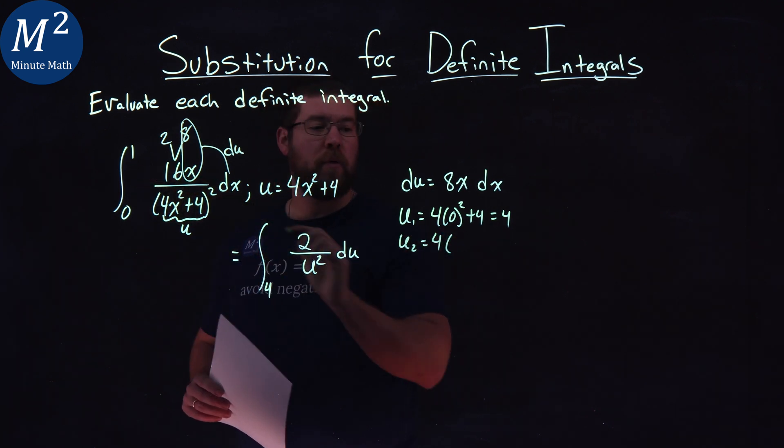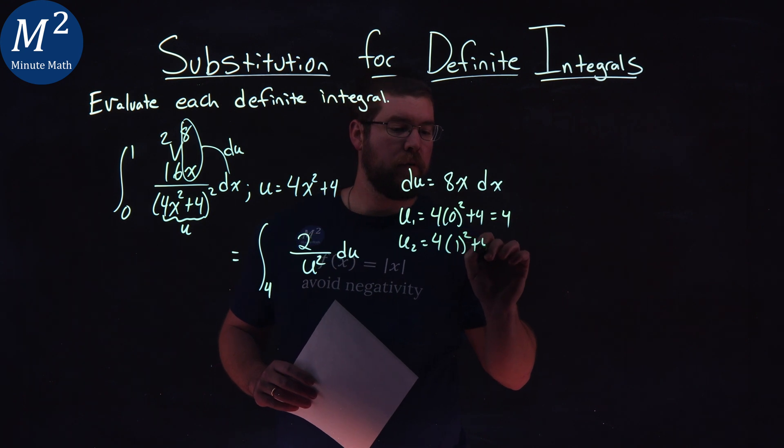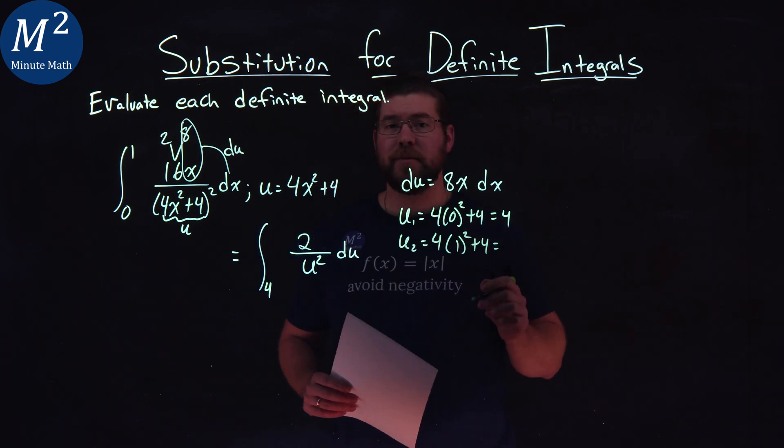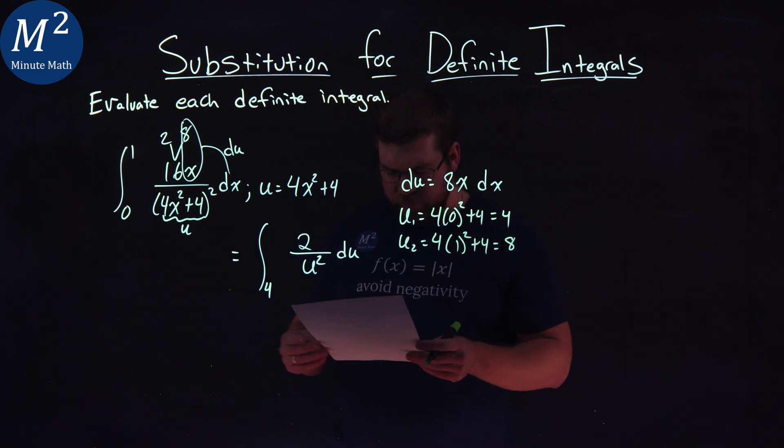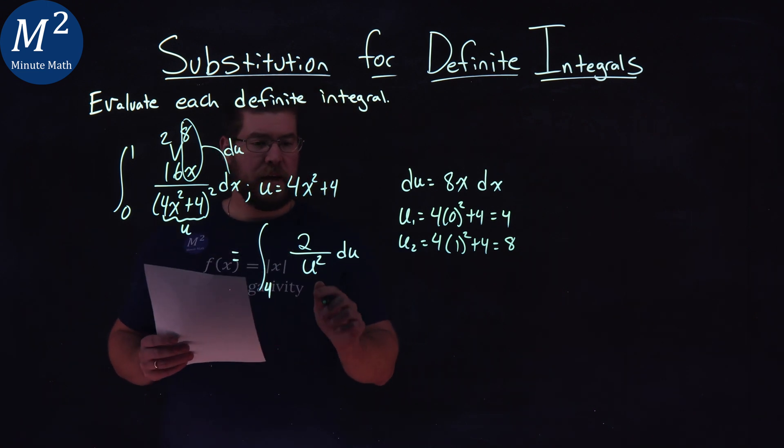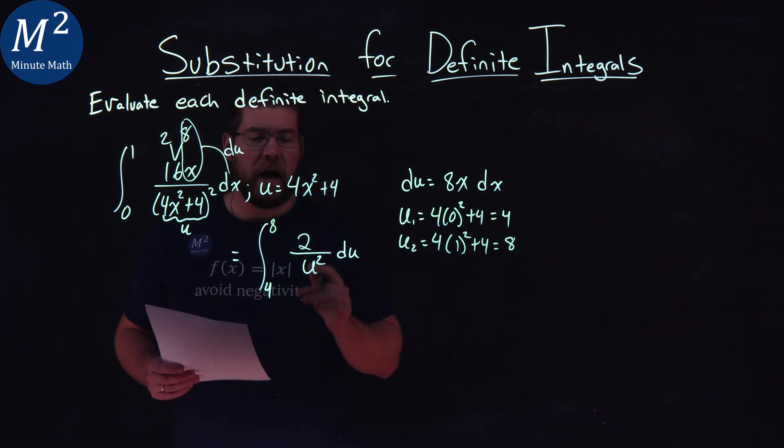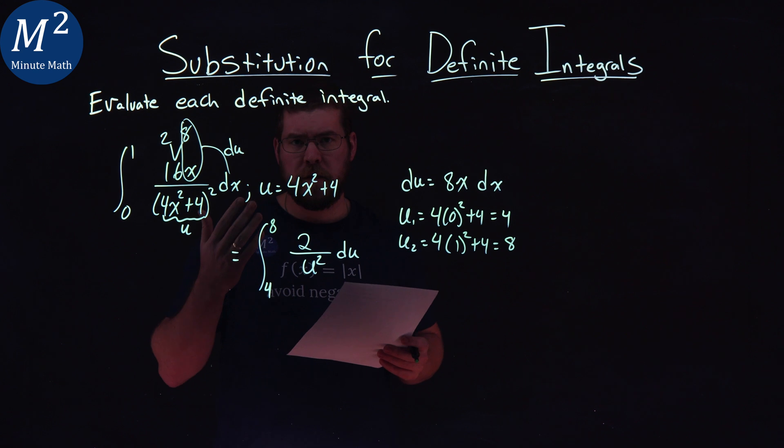Same thing, 4 times upper bound 1 squared plus 4, and this comes out to be 8. So we have an upper bound here of 8, and now we have an integral in terms of u that's much easier to solve. The integral from 4 to 8 of 2 over u squared du.